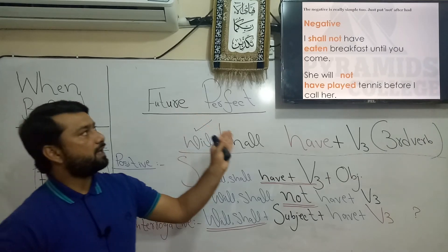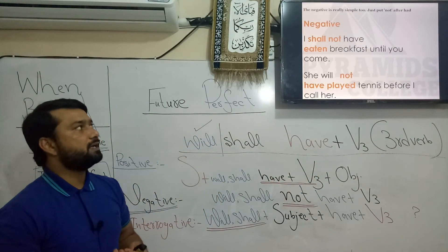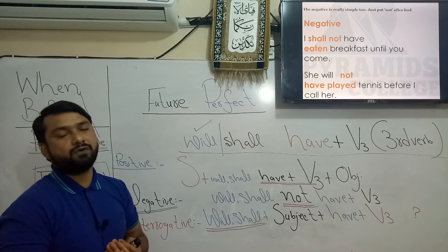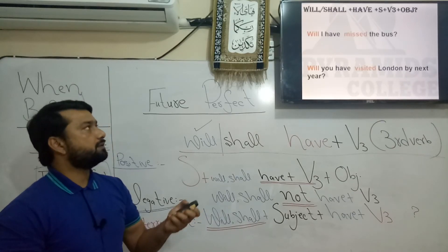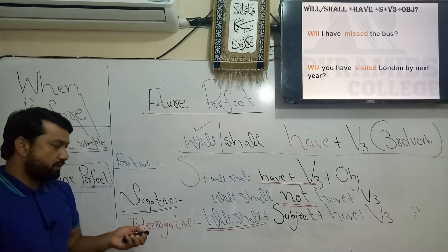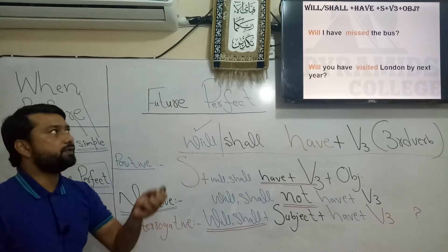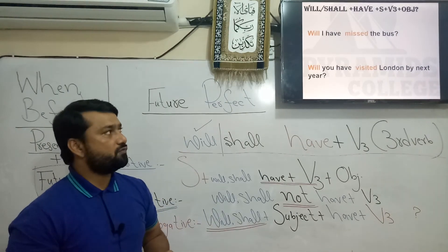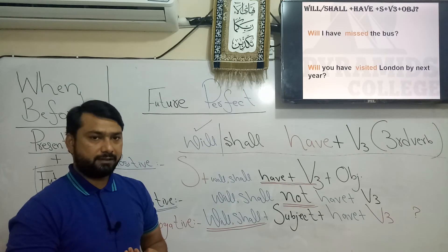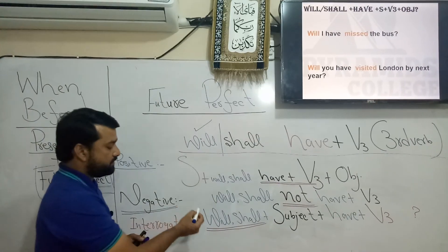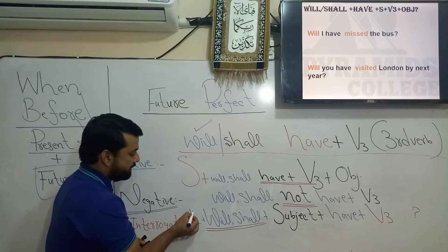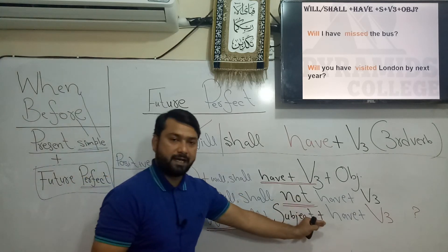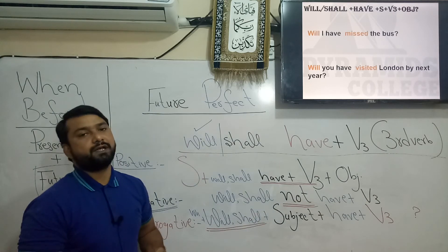For negative: 'I shall not' — or you may say 'I will not have eaten breakfast until you come.' 'She will not have played tennis before I call her.' For interrogative, place will or shall first, then subject, have, and V3: 'Will I have missed the bus?' 'Will you have visited London by next year?' For WH-questions, put the WH-word at the beginning: 'Why will you have left the city before informing me?'